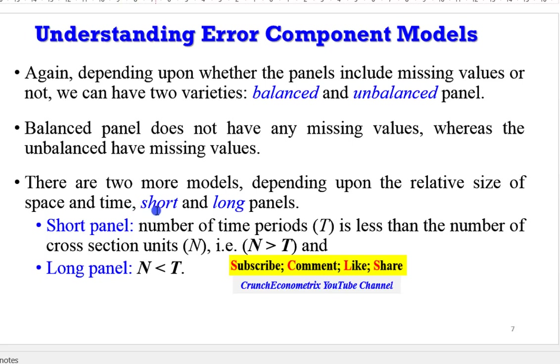Panel data can also be either long or short. A short panel has N greater than T, that is, the number of cross-sections being more than the number of time periods, while a long panel has N less than T.